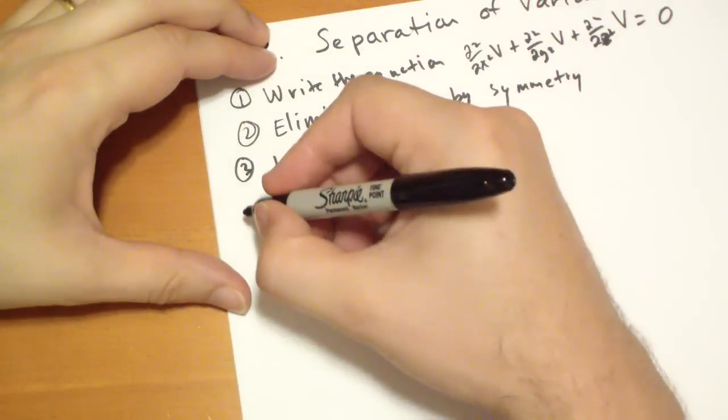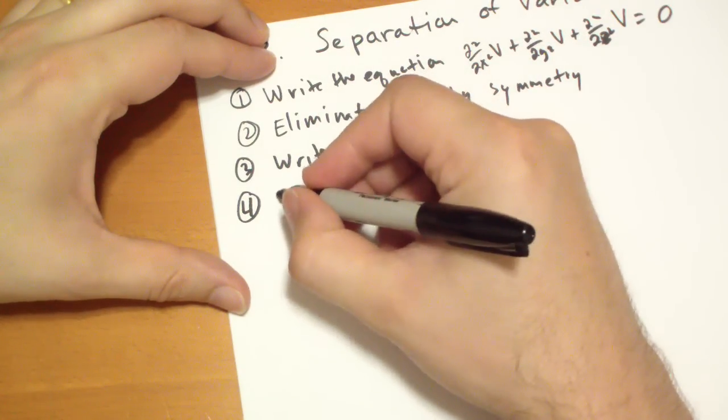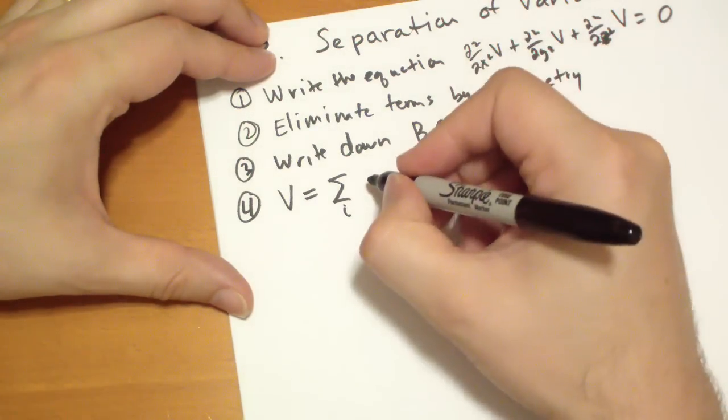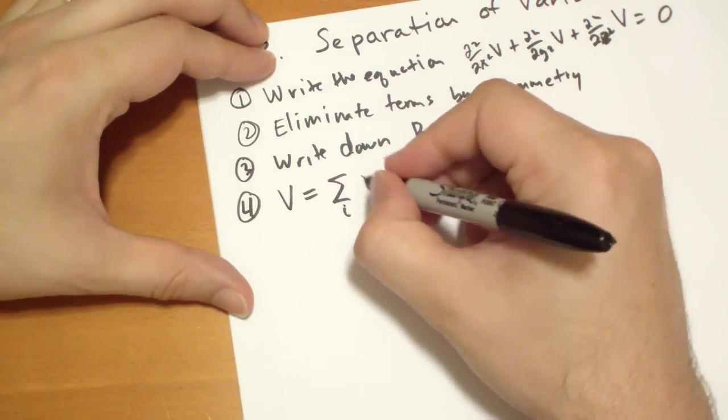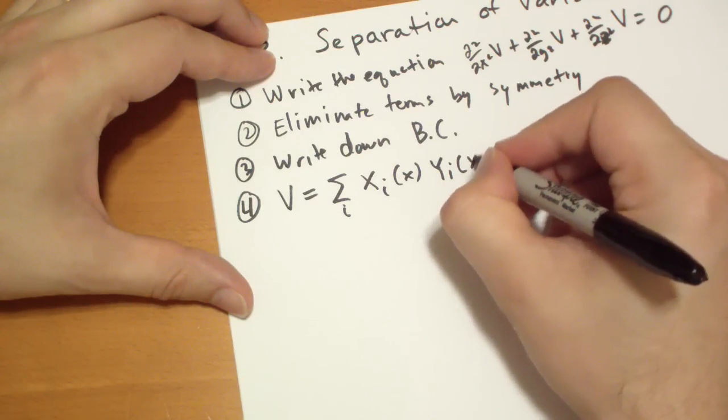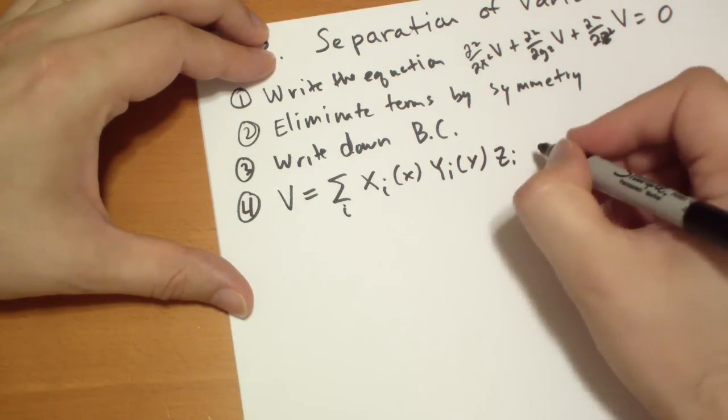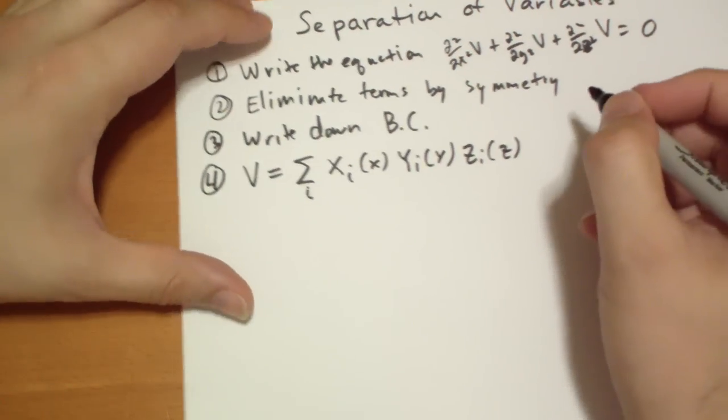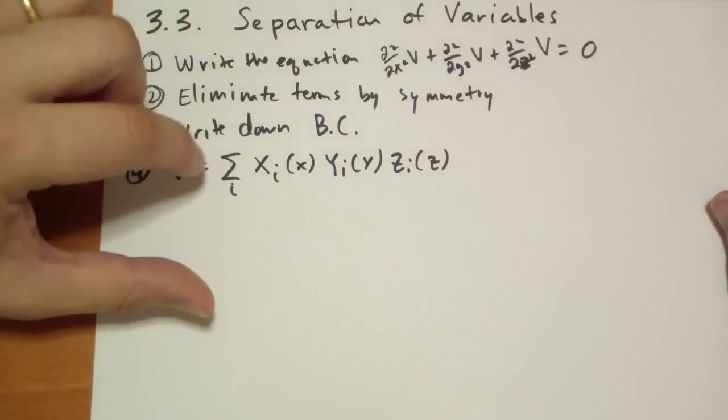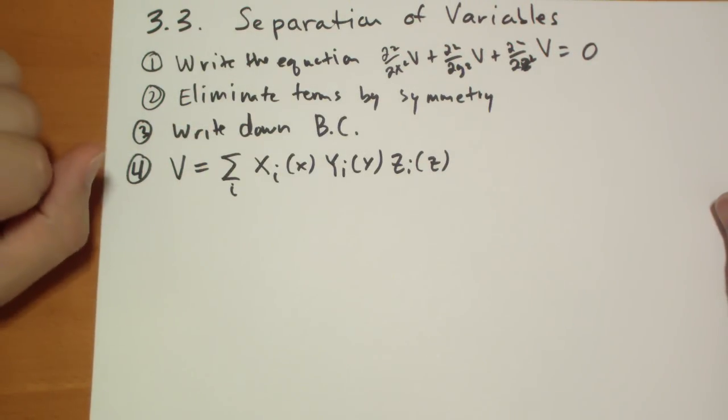After we have the boundary conditions, we can write V as a sum over i of some terms that have to do with x, some terms that have to do with y, and if you still have z, some terms that have to do with z.